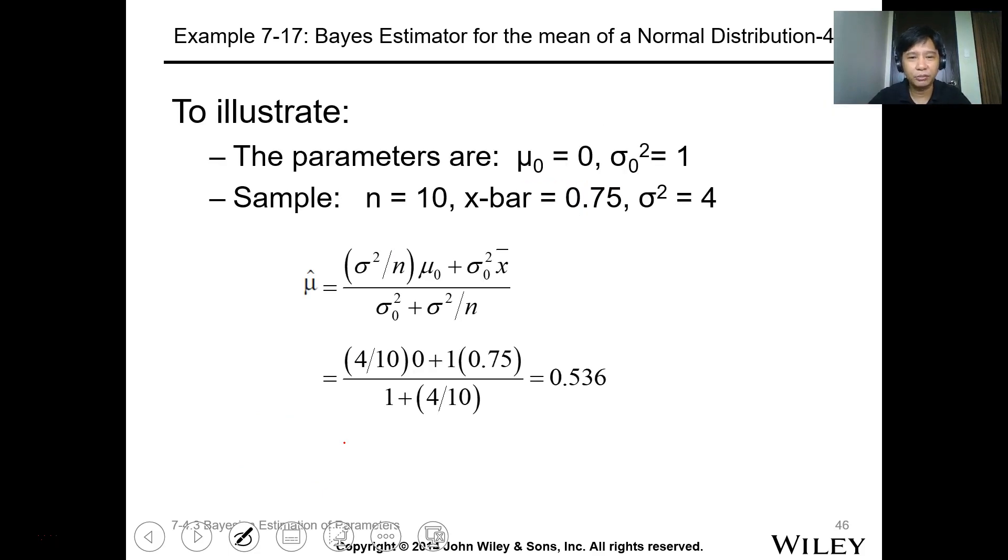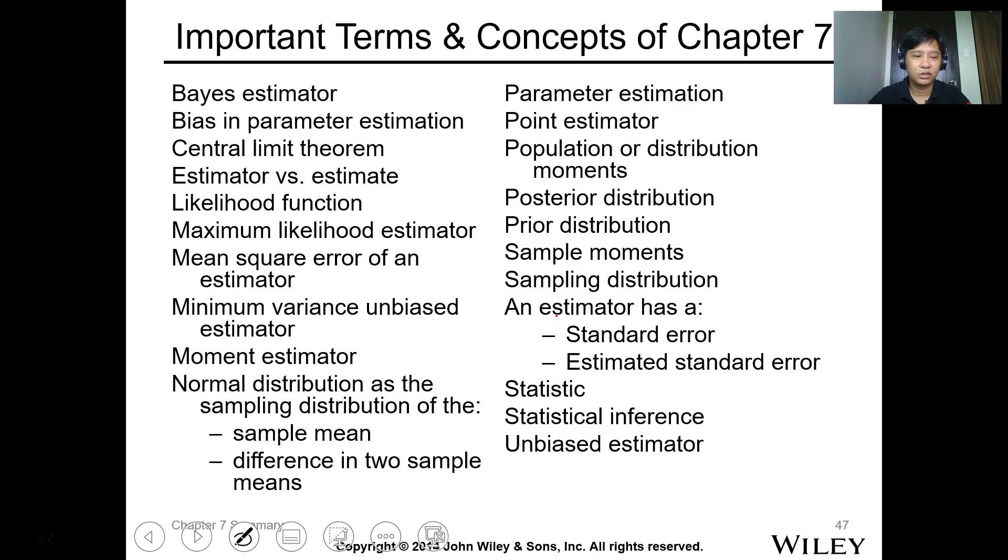To illustrate, you can have this example where the parameters are for a normal distribution where the mean is zero and the variance is one. We have sample n, we have X-bar, and sigma. Get the estimation using this estimate. Substitute them using direct substitution. We end our lesson 6P here.